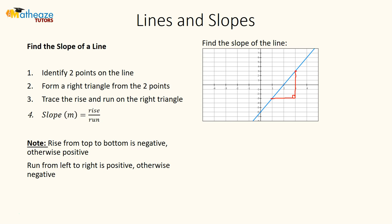An important thing to know when dealing with rise and run: if you're going from top to bottom, that is a negative rise. You can look at the y-axis — as you go from top to bottom, the numbers become more negative. For the run, if you're going from left to right on the x-axis, the numbers go from negative to positive, so left to right is positive. Right to left is negative.